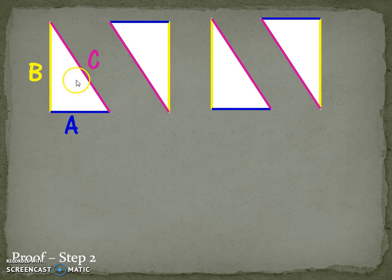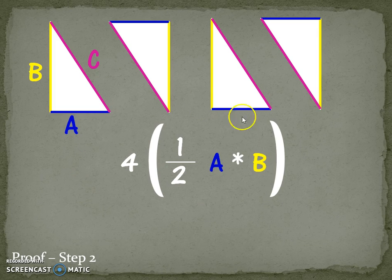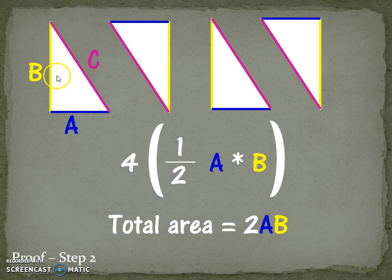Now what we're going to do is find the area of all of these triangles together. We know that the area of one triangle is half base times height. But we have four of them, so we're actually going to multiply this whole thing by four. So, the total area of these triangles is 2AB. Let's keep this in mind and move on to step three.